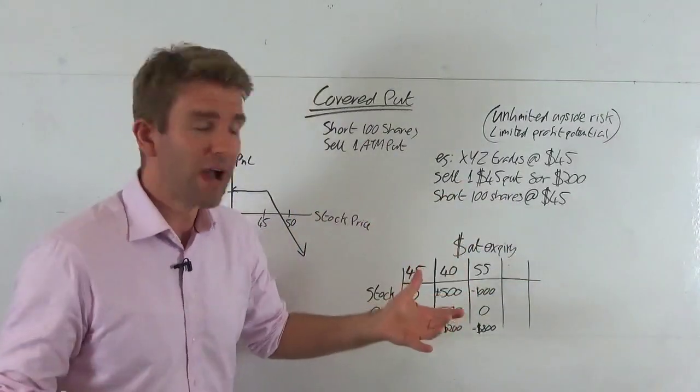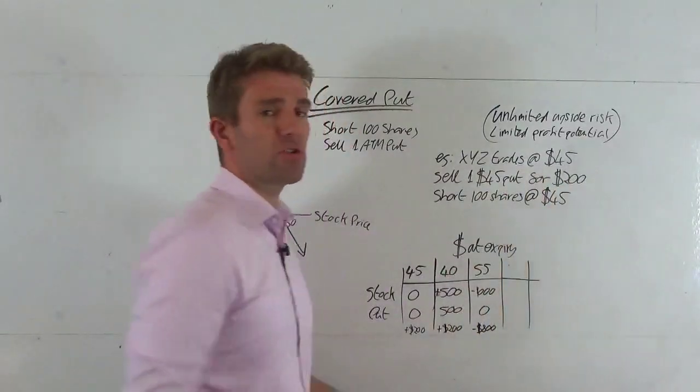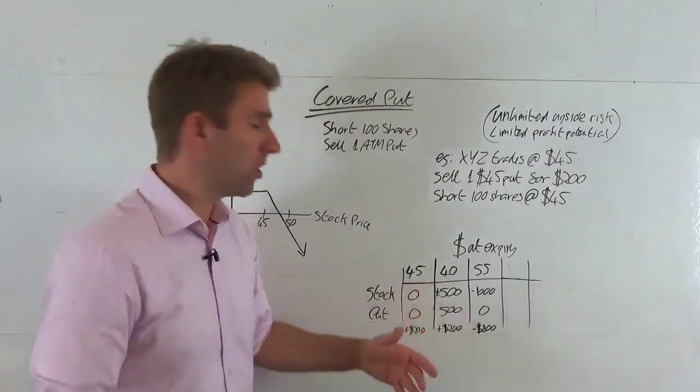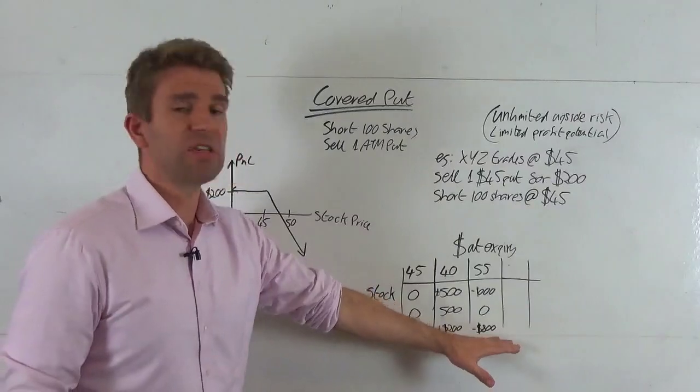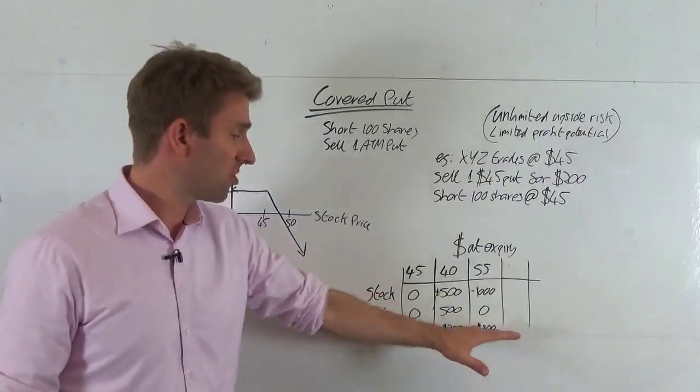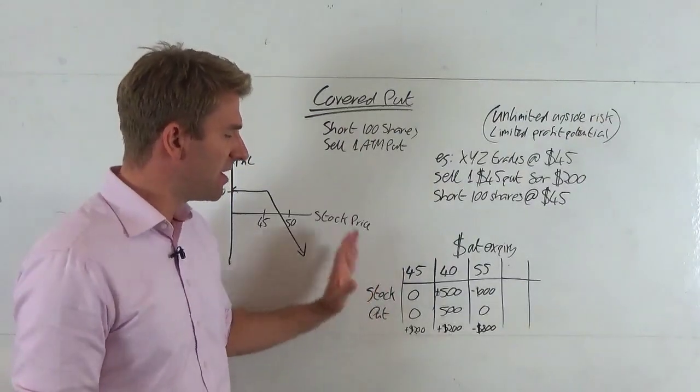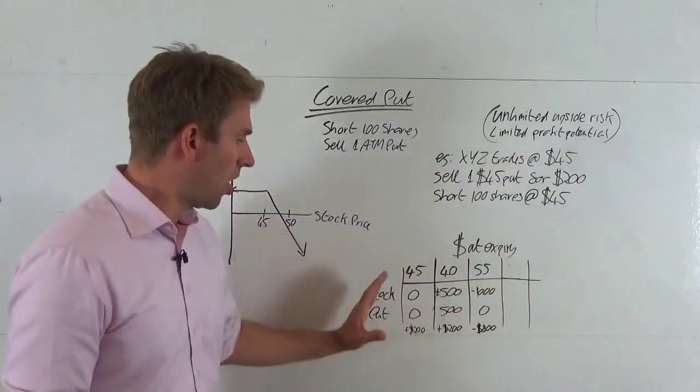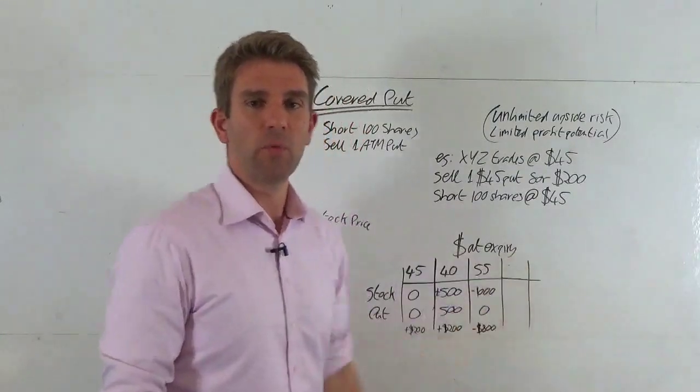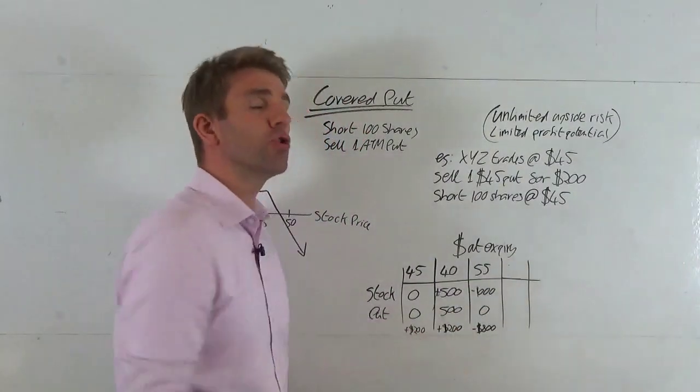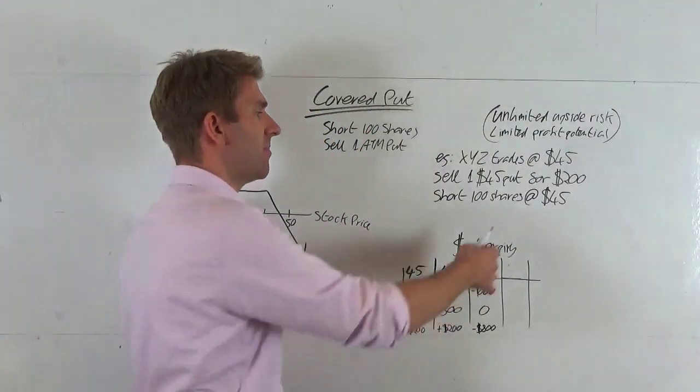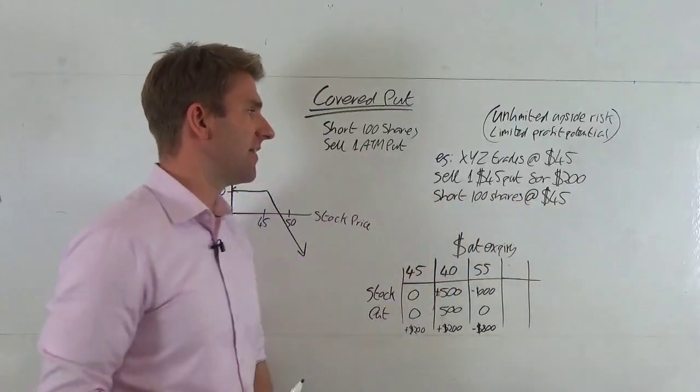But we've received $200, don't forget, from this put option which is worthless because the right to sell something at $45 that's $55 has no value. So we received the $200 credit on that, so we can take that off the loss of the $1,000 and we pay $800 loss if we were to cover that at $55. And you can see that however high we go up, we're still going to lose a lot more on the stock, but we're going to receive this $200 and cushion the loss very slightly by writing or selling this put option here.